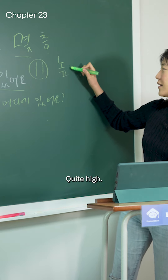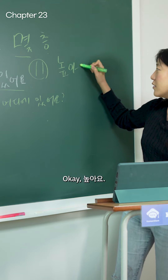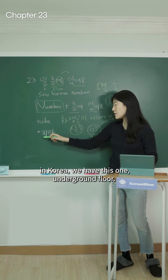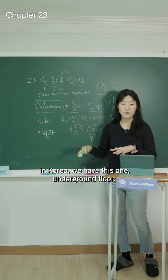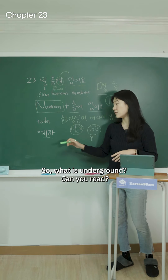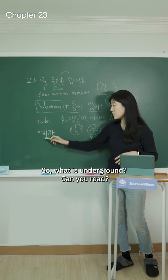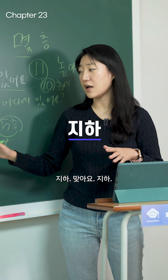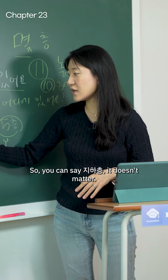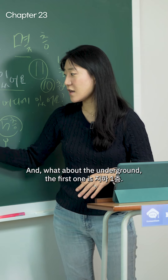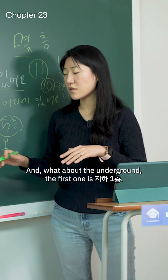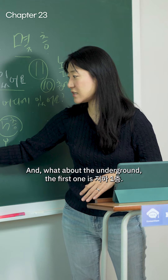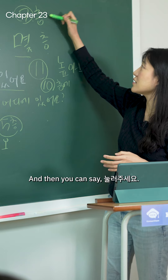이거 높아요. Quite high. 높아요. In Korea, we have underground floors. So what is underground? Can you read? 지하. 맞아요, 지하. So you can say 지하층. And the first underground floor is 지하 1층.